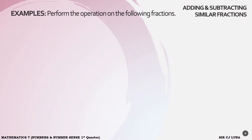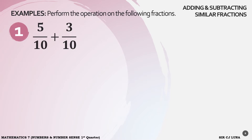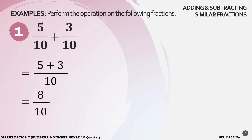Examples. Perform the operation on the following fractions. Let's say we have 5 over 10 plus 3 over 10. These two fractions are similar fractions because they have the same denominator which is 10. So all we have to do is combine the numerators: 5 plus 3, and then copy the denominator, 10. 5 plus 3 is equal to 8 over 10. But this is not yet the final answer — 8 over 10 can still be expressed in lowest term which is 4 over 5. And that's our answer.